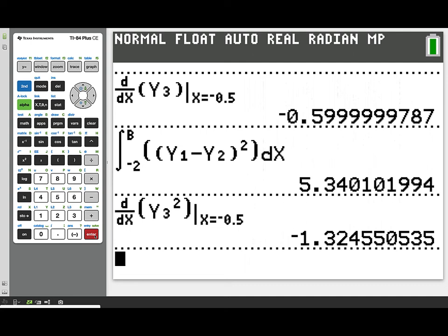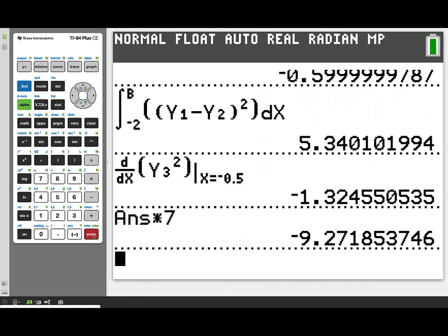Remember that cross-sectional area is y1 minus y2 quantity squared. So if we take y3 squared and take its derivative with respect to x, we get this value that you see here, negative 1.32455035. But remember, x is changing at the rate of 7 units per second. So we want to multiply that result by 7 to get our final answer using the chain rule of negative 9.2718.